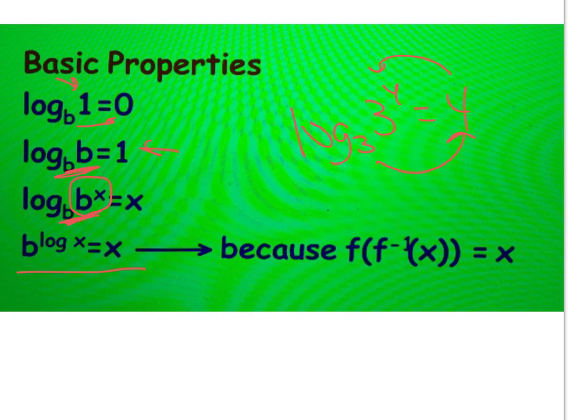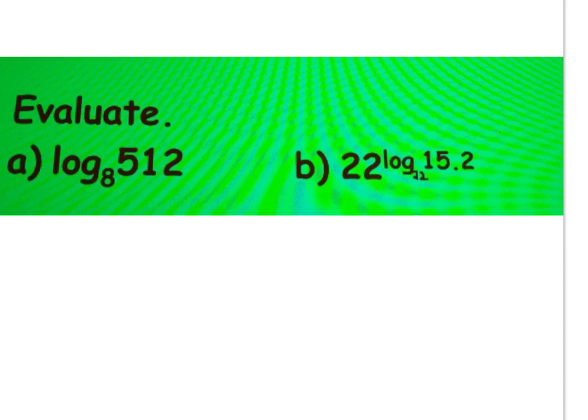If you have an exponent with a log in it, if log is in the exponent and that base is the same as the big base down here, whatever the number is after log is what it is. Because remember, they're inverses and they would just cancel, and you get x. When you do f of f inverse of x equals x, we've done that before.